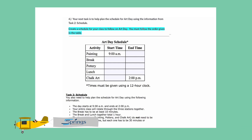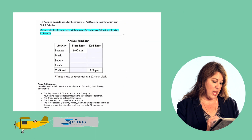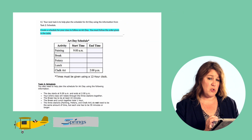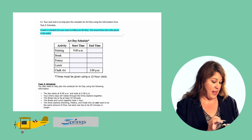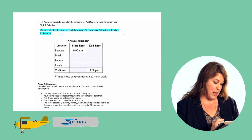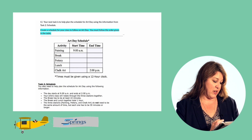So this is question number four. The question is: your next task is to help plan the schedule for art day using the information from the task to schedule. Create a schedule for your class to follow on art day and you must follow the order given in the table. We're going to create a schedule — there's no right or wrong answer, but we have to look at the information and make sure we plan the schedule using what they've given us.